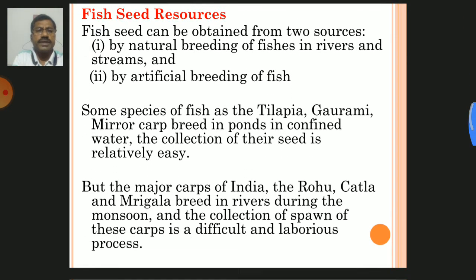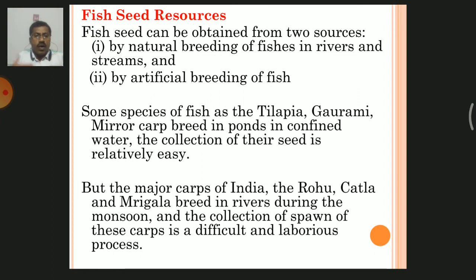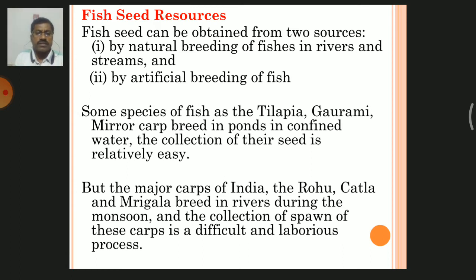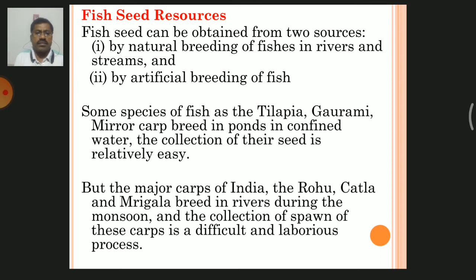Now, fish seed resources — how do we obtain that seed? Fish seed can be obtained from two sources: one is by natural resources, that is natural breeding of fishes in rivers and streams, and another is by artificial breeding of fishes in captivity.